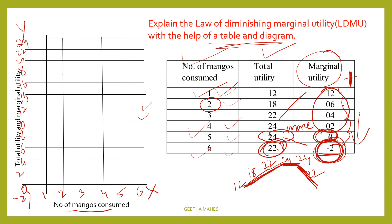Plot total utility against the number of mangoes. First mango total utility is 12, second is 18, third is 22, fourth is 24, fifth is also 24, sixth is 22. Connect these points to draw the total utility curve — it first increases, then becomes constant, then decreases.